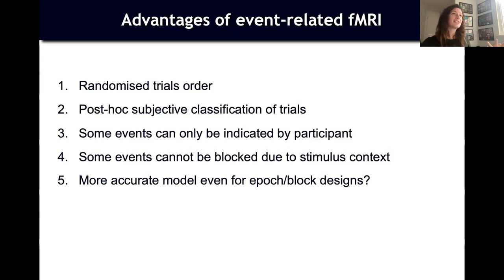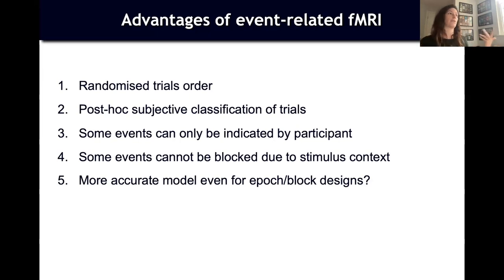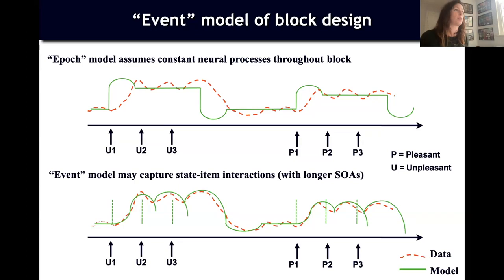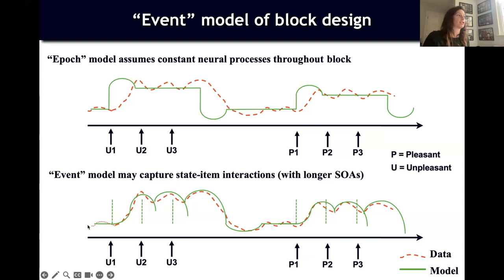Last but not least, an event-related design very often captures variability in the data that may be closer to reality than a block design. You can still have a block experimental structure but model it as event-related, modeling each event separately. If you already have a dataset and couldn't make design decisions, you still have options — you can think about what is better for your data.